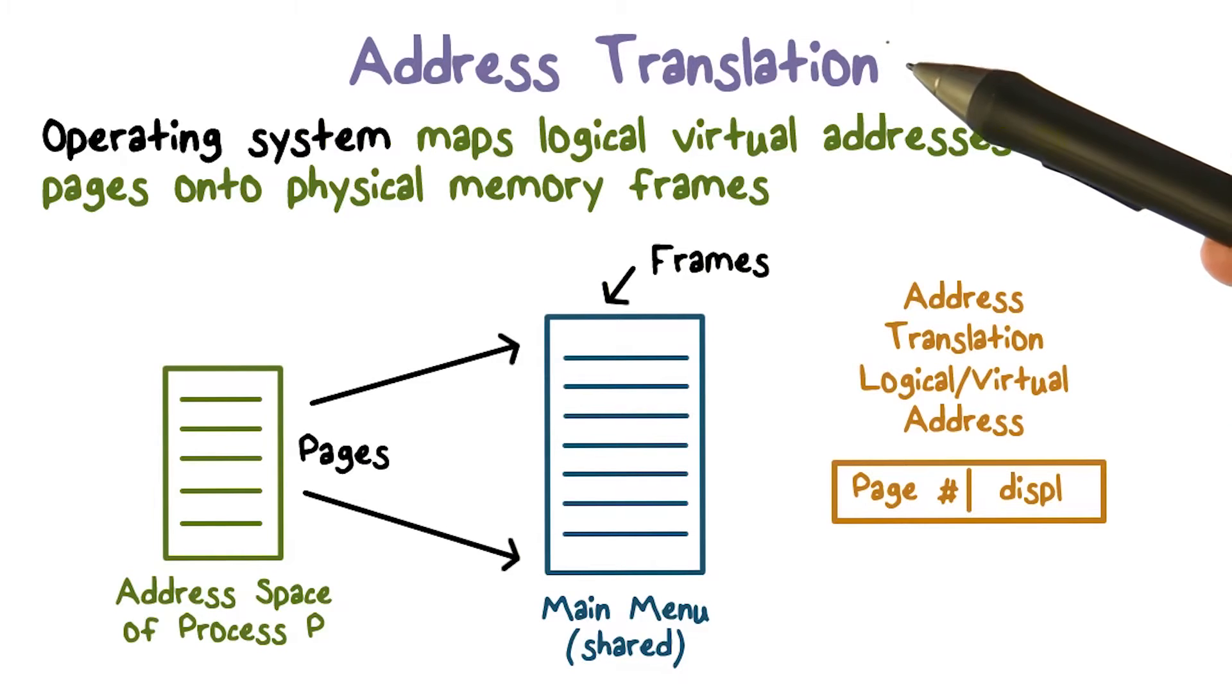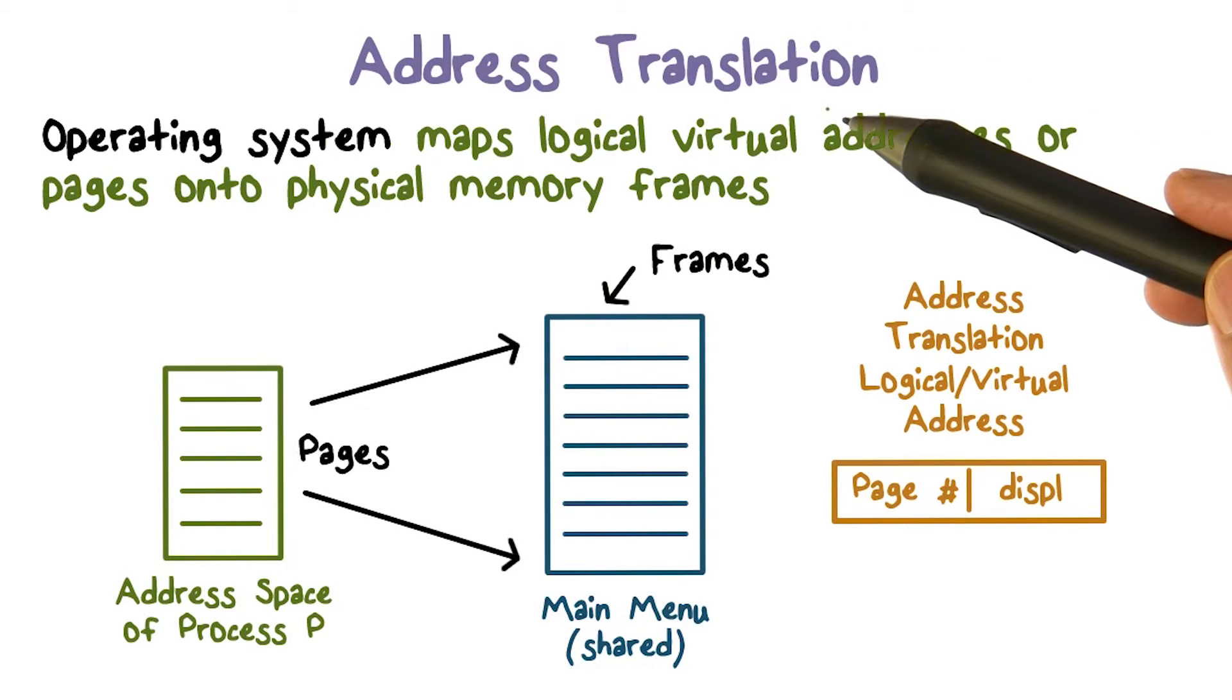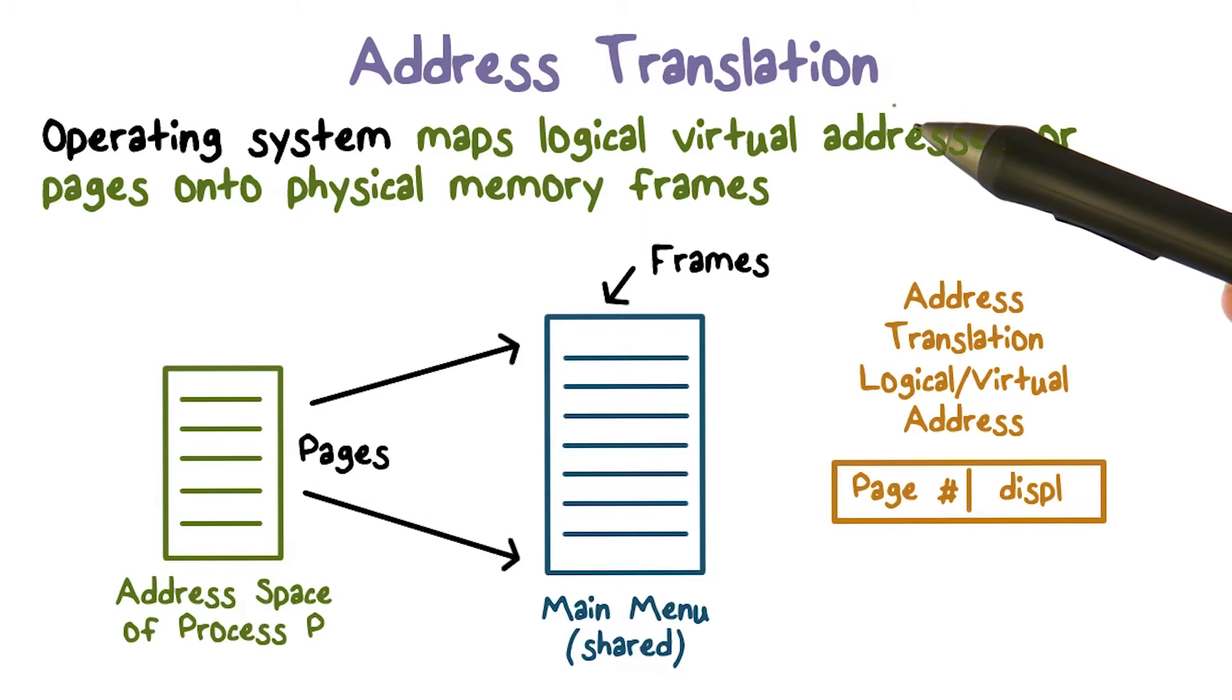The address translation process. The reason that translation has to happen is because the process thinks it has this big address space, contiguous going from zero through some max. And then we said the physical memory, one process may not have all of it at the same time, or physical memory may be much smaller than the address space size itself. So logical address or virtual address is actually going to be different from the physical address that we're talking about.